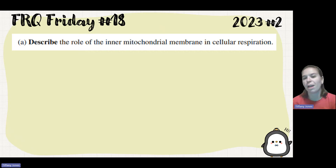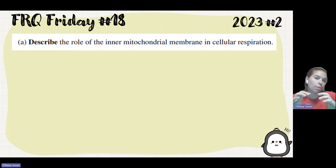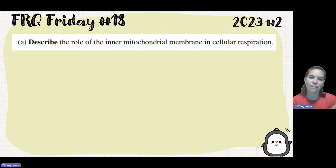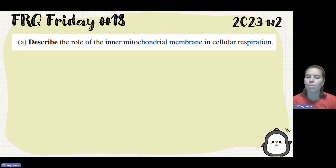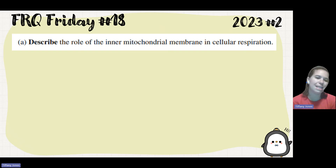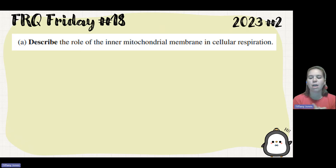The first question asks to describe the role of the inner mitochondrial membrane in cellular respiration. Part A is always going to be a biology question. In the inner mitochondrial membrane, also known as the cristae, we see the electron transport chain. NADH and FADH2 generate electrons and get oxidized. Those electrons move down the electron transport chain, pumping protons across the membrane and creating a gradient — there's an increase of protons in the intermembrane space. We also see ATP synthase in this membrane, using that gradient to synthesize ATP.